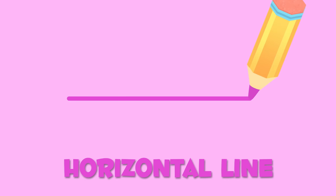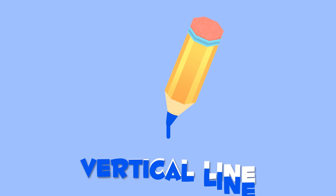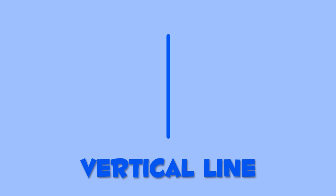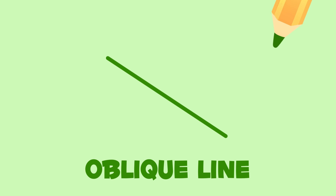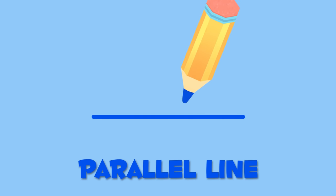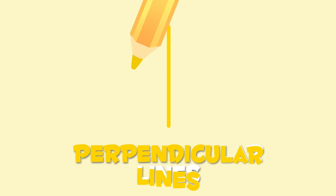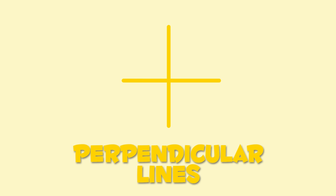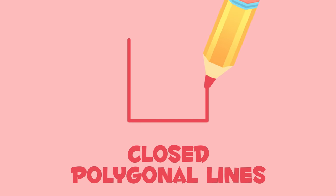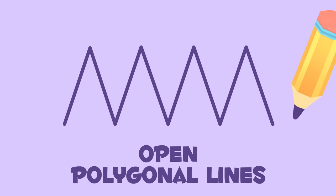Let's recap! Horizontal lines. Vertical lines. Oblique lines. Parallel lines. Perpendicular lines. Closed polygonal lines. Open polygonal lines. Curved lines. You have learned everything about all types of lines!